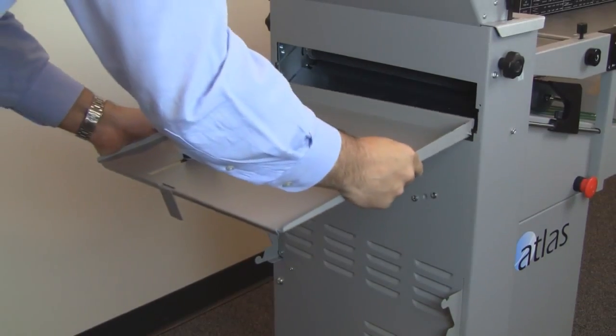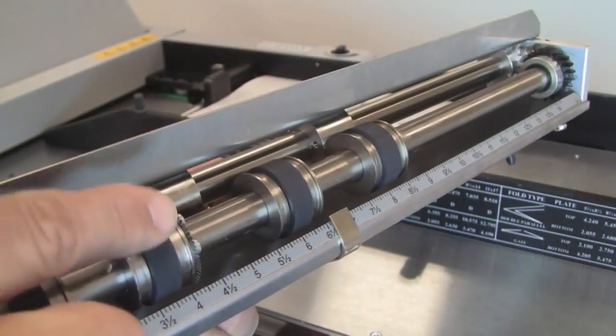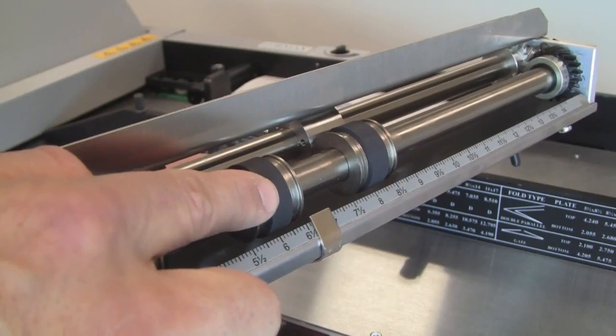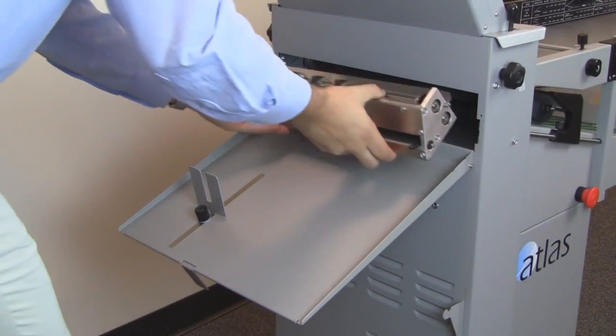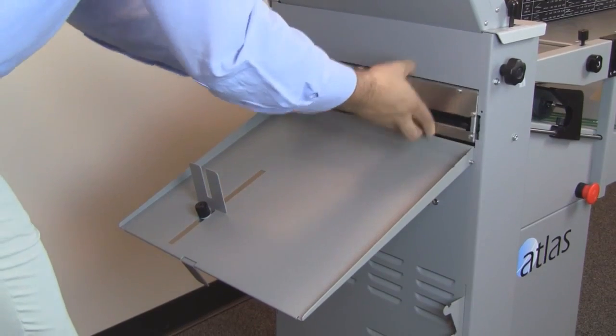First install the catch tray. Now install the perforator scorer. The blades can be adjusted for different paper widths. They can also be swapped out to perforate or score. With the perforator scorer in place, load your paper and press start.